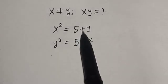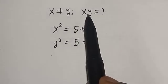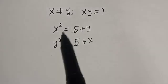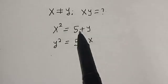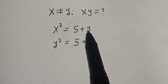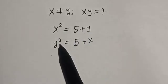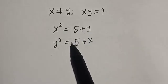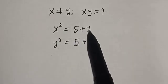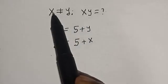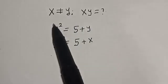Hello, welcome to Magist. In this class, I want to find the value of x and y from this equation: x squared is equal to 5 plus y, and y squared is equal to 5 plus x, provided x is not equal to y.